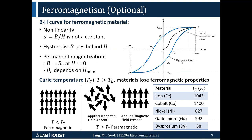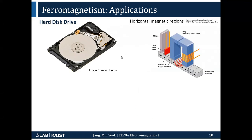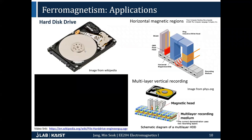Hysteresis can be used for creating information storage and memory devices. Ferromagnetism is actually one of the early technologies that has been utilized, specifically in hard disk drives. Nowadays, the usage of hard disk drives is going down, and people are turning to a new storage system called solid-state devices.